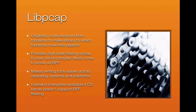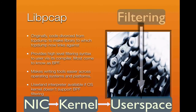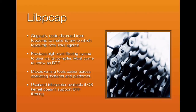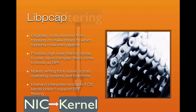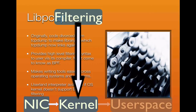Beyond making tool development easier across platforms, libpcap also has a user-land interpreter for kernels that do not support BPF filtering. However, this is hugely inefficient because packets must travel from the network card to the kernel to the application before they can be filtered — three steps. When filtering is done in the kernel, as with Linux and BSD, packets are filtered right after arriving from the NIC, saving significant CPU time by avoiding unnecessary copies to user space.